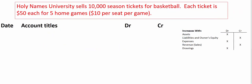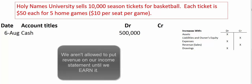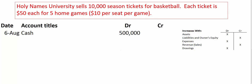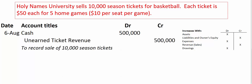Now let's change the facts: we sell out all our home games in advance by selling season tickets. We've got five home games at $100,000 each, so that's $500,000. Cash is going up, so we debit cash. But we haven't earned that revenue — it's August 6th and our basketball games don't start until September. So instead of crediting a revenue account, we credit a liability account called unearned ticket revenue. Our customers paid us $500,000 and we now have a liability showing we owe $500,000 worth of basketball entertainment.